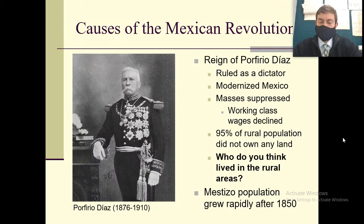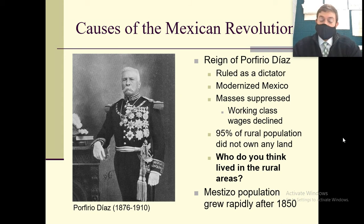So here are some causes of the Mexican Revolution. You have Porfirio Díaz, who was the president — he was a dictator. He helped modernize Mexico with railroads and things like that, but he suppressed a lot of people. Working class wages went down while he was president, and 95% of the rural population didn't own any land.